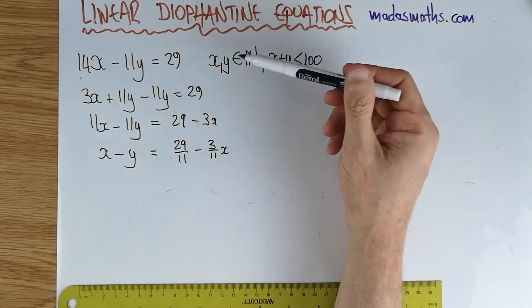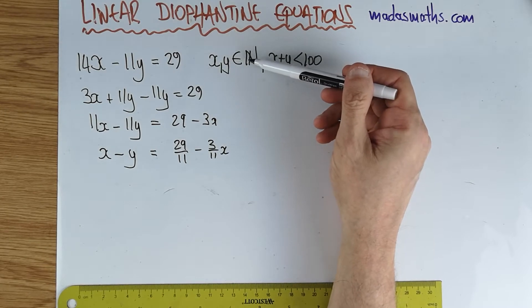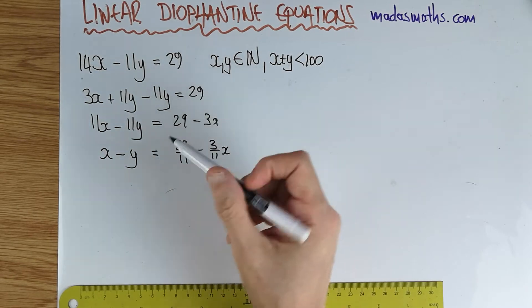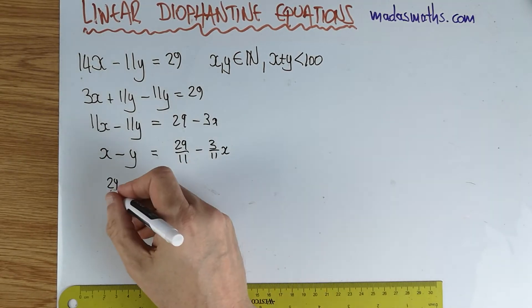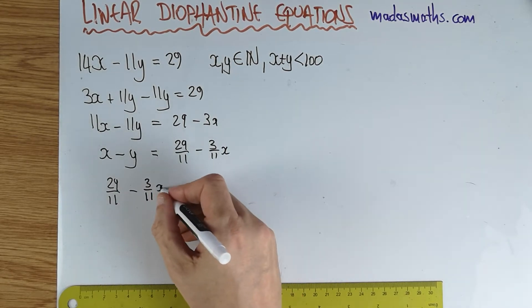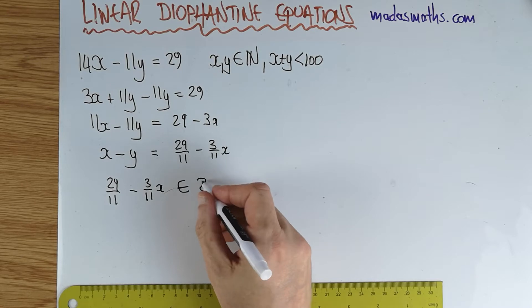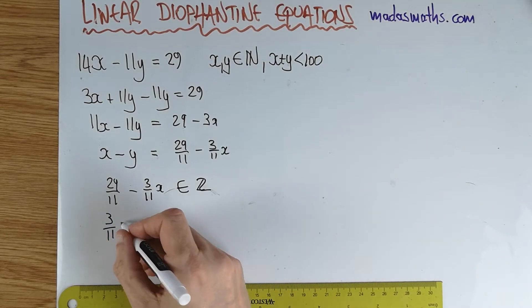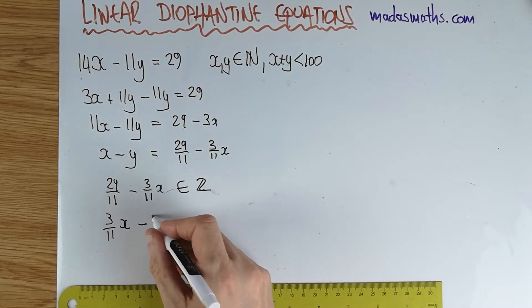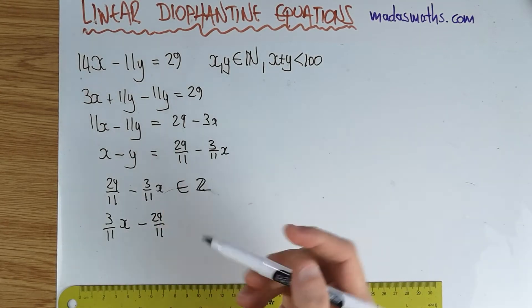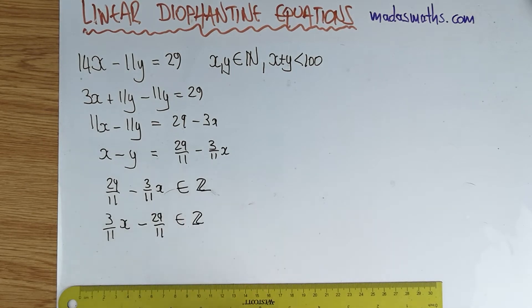So I can say x minus y is 29 over 11 minus 3/11 x. And since x and y are natural numbers, x minus y must be an integer on this side of the equation. Therefore, that must be an integer. I'm not saying it's a natural number, but certainly will be an integer. So minus 3/11 x is an integer, and therefore 3/11 x minus... must also be an integer. It's not a big step, this one. It's just I wanted to make this positive and this negative. Not that it matters, but it's just purely for looks.